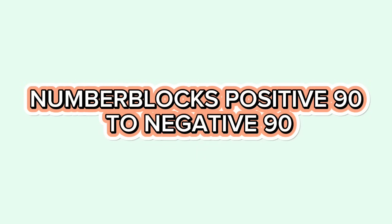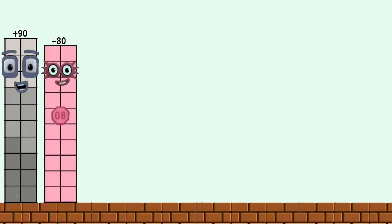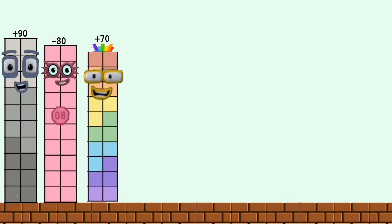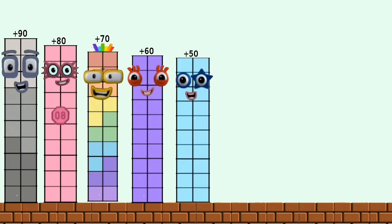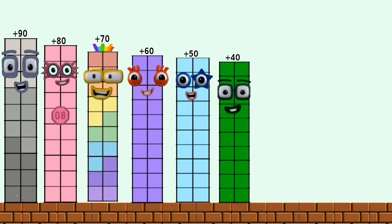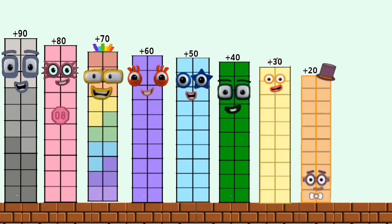Number blocks positive 90 to negative 90. Positive 90. Positive 80. Positive 70. Positive 60. Positive 50. Positive 40. Positive 30. Positive 20. Positive 10.